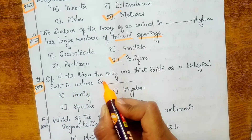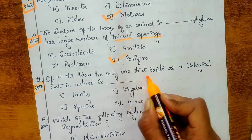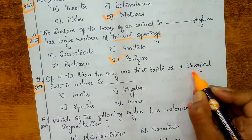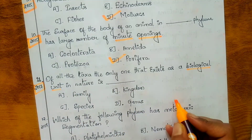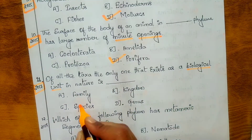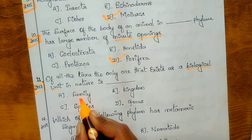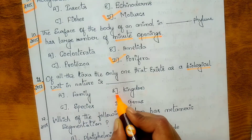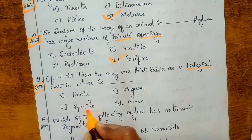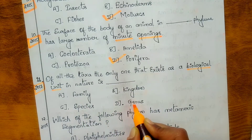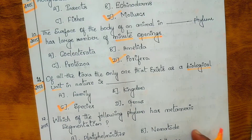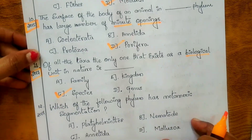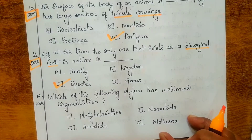Eleventh question, from 2017: of all the taxa, the only one that exists as a biological unit in nature is which of the following? Options are: A. Family, B. Kingdom, C. Species, D. Genus. The answer is C — Species.